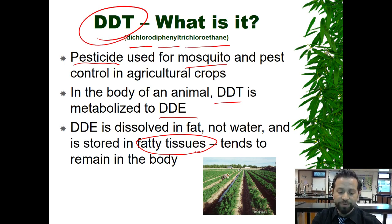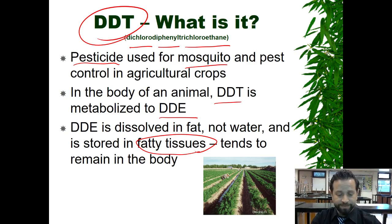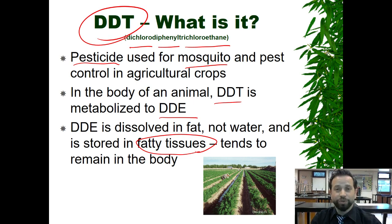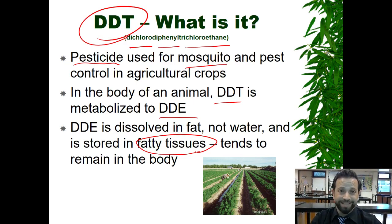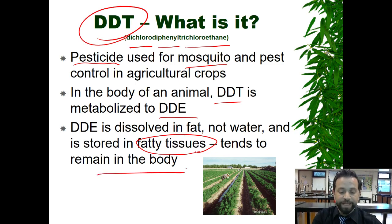In the body of an animal, DDT is metabolized into DDE — you don't have to know what that stands for. It's actually dissolved in fat, not water, and it's stored in our fatty tissue. Every animal, regardless of how skinny or not skinny they are, has fatty tissue in their body, and this tends to remain in the body.